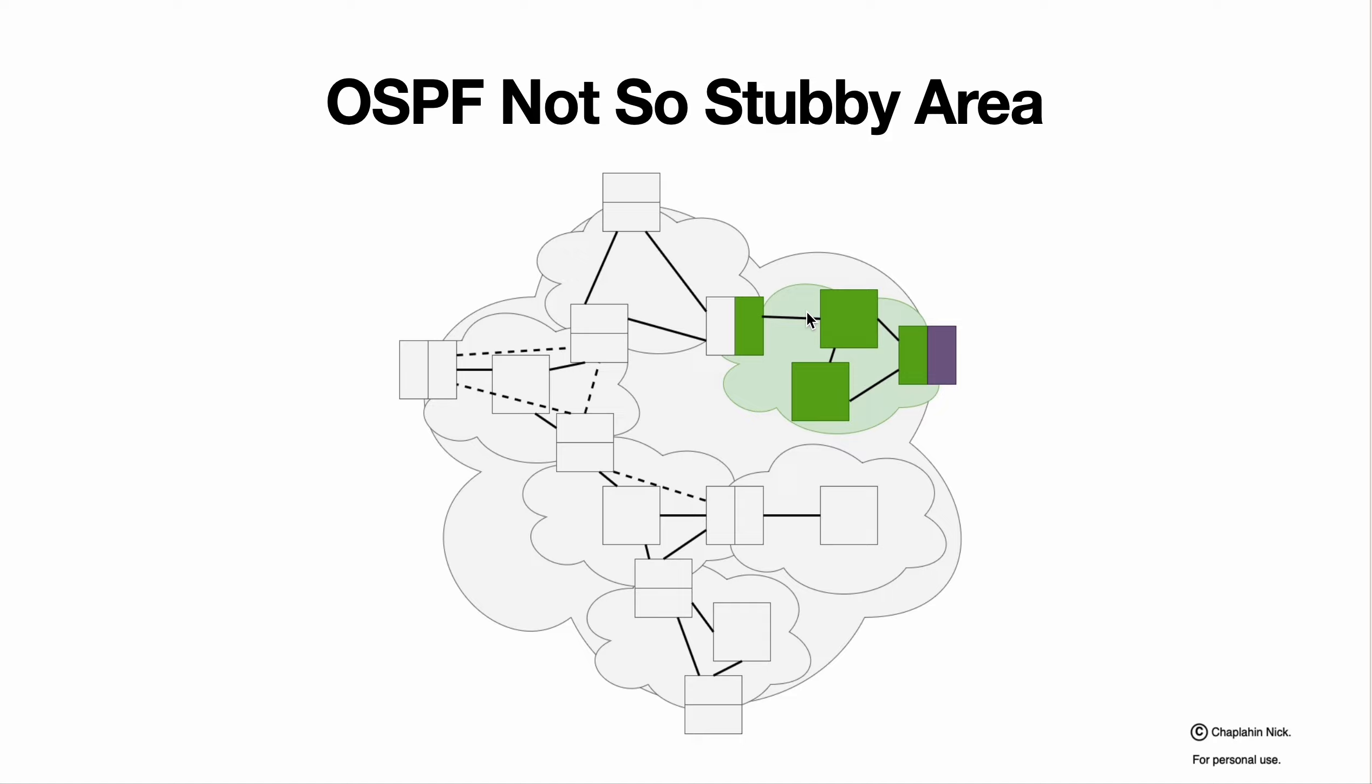We expect that not that much transit traffic will be there. For example, in this case, we have an Autonomous System border router that is connected to another Autonomous System. But at some case we expect that all or most traffic from this Autonomous System will get to this area and not go further. So we can call this area not so stubby. Why? I'll explain a little bit later when we go back to LSAs.